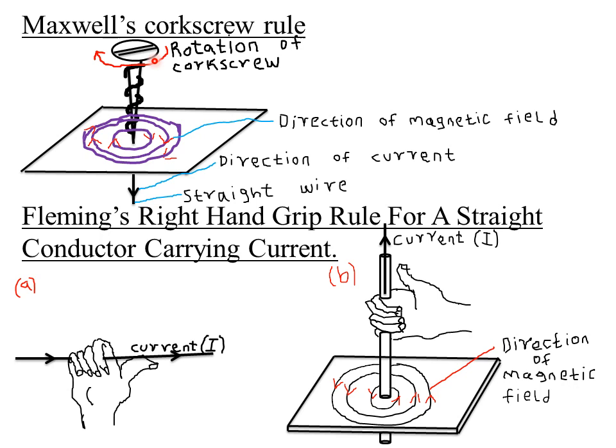Imagine this is your screw and you want to drive it forward — that is, you are rotating it in the direction shown by this arrow. If you are rotating the screw such that it is moving downwards, then the direction of rotation of the screw will be similar to the direction of the field lines.